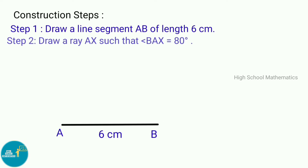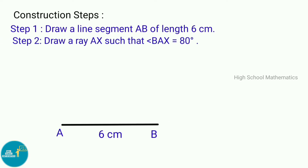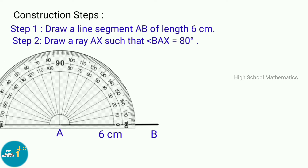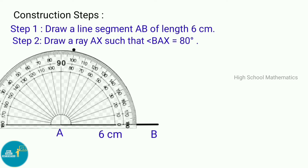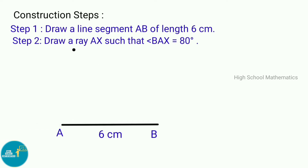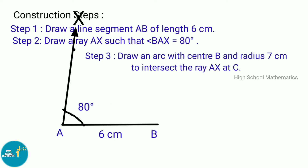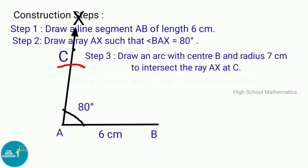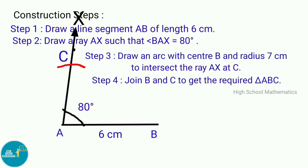Construction steps — Step 1: Draw a line segment AB of length 6 centimeters. Step 2: Draw a ray AX such that angle BAX equals 80 degrees. Step 3: Draw an arc with center B and radius 7 centimeters to intersect ray AX at C, to get the required triangle ABC.